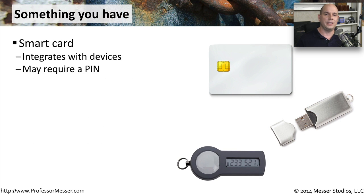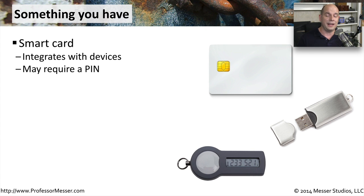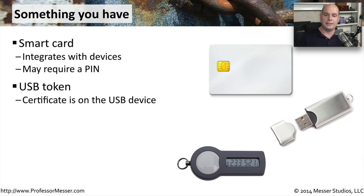An authentication type used often is something you have — something with you that helps identify you as an individual. This may be a smart card that you slide into or get close to a resource reader. It may also require a PIN so that someone couldn't simply steal your card and gain access, adding an additional layer of security. Another piece is a USB token: a certificate on the USB drive that you must insert, which also requires something like a PIN to gain access.